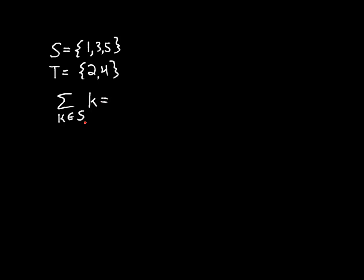And I put a k out here. And what that means is, for each element of the set, we plug it in, and that's a term in our sum. Since I have three elements, there will be three terms. And it will be 1 plus 3 plus 5, since I'm just summing the values of the elements. And that happens to be 9.